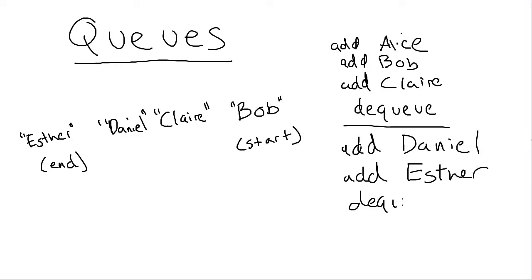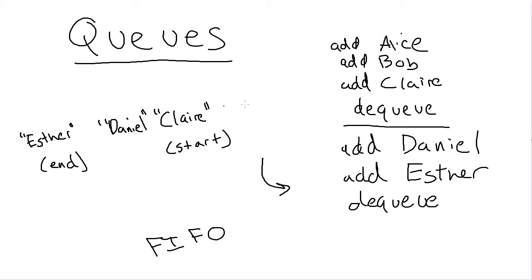If we do another dequeue operation, the person that comes out is Bob, not Esther — because this is a first-in, first-out data structure. Bob was added right after Alice, so he's the first one out now. This dequeue removes Bob, leaving Claire at the start of the list. The queue keeps things in the same order they were put in and returns them in that same order — it's basically a temporary holding area for data.